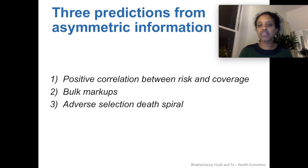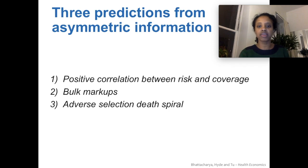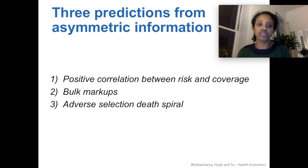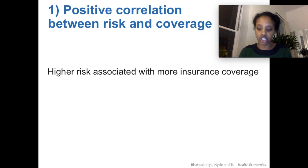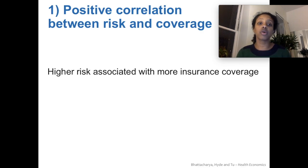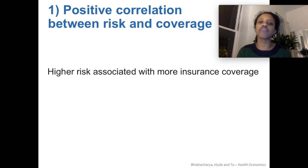If asymmetric information is a real problem — or a feature — of insurance markets, there are three phenomena that we can expect to see. The first one is that there would be a positive correlation between risk and coverage, meaning that the higher risk customers want to get the fullest insurance contracts. Otherwise, everybody would want to be equally avoiding risk.